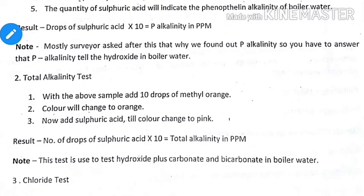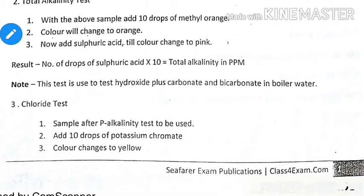The total alkalinity test determines the amount of all hydroxides, all carbonates, and two-thirds of the phosphate. We also determine carbonate and phosphate because river water, which is low in carbonates and sulfates, can cause corrosion. To perform the test: to the above sample add 10 drops of methyl orange — color changes to orange. Then add sulfuric acid until color changes to pink. The result: drops of sulfuric acid multiplied by 10 equals total alkalinity in ppm. This test is used to measure hydroxide plus carbonate plus bicarbonate in boiler water.